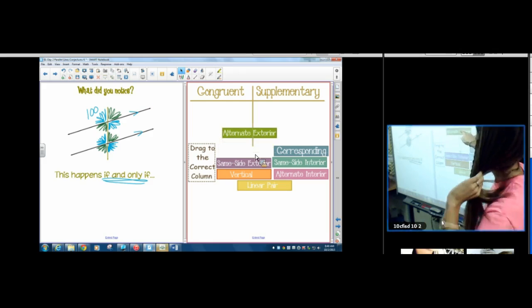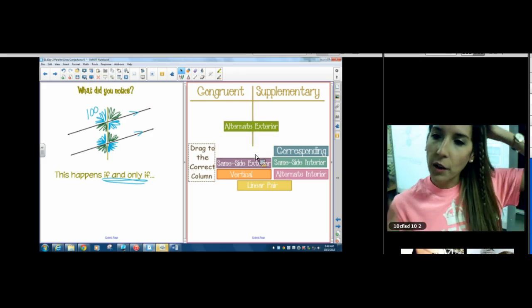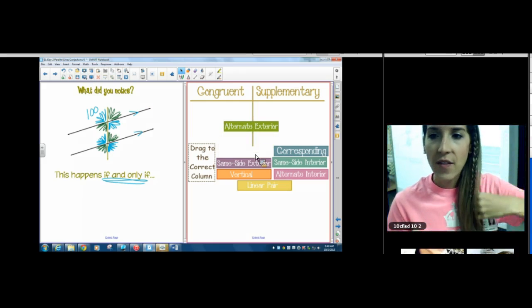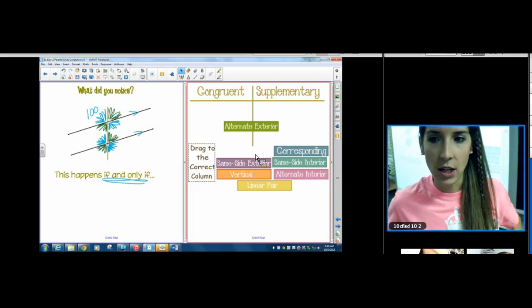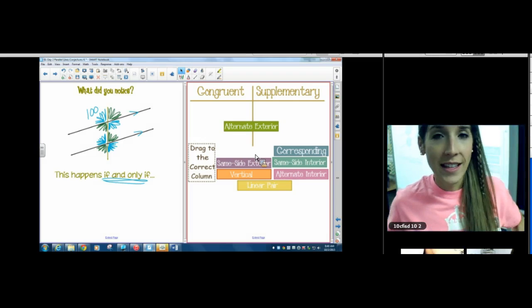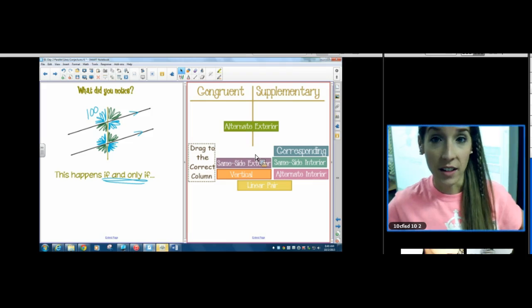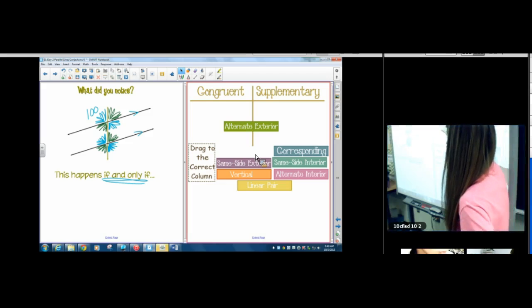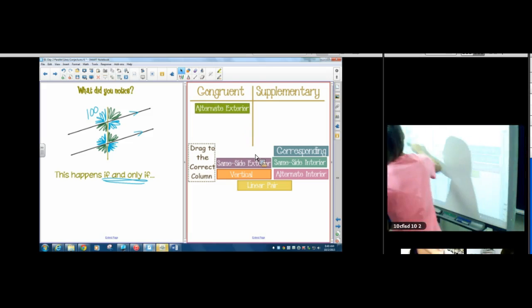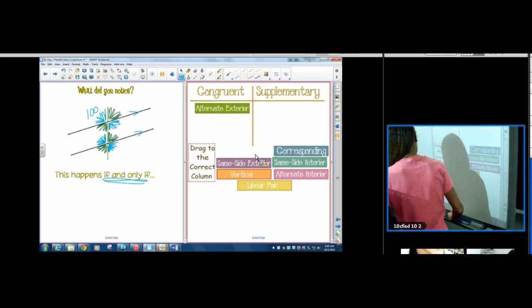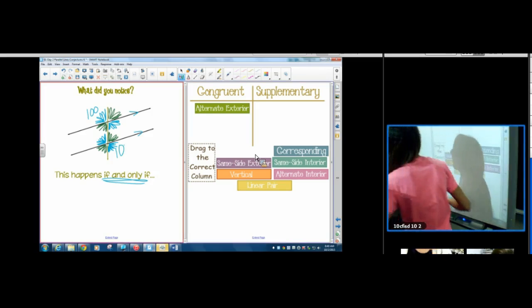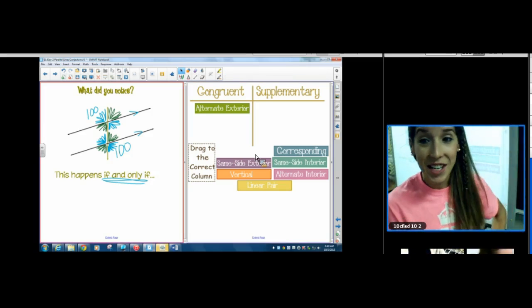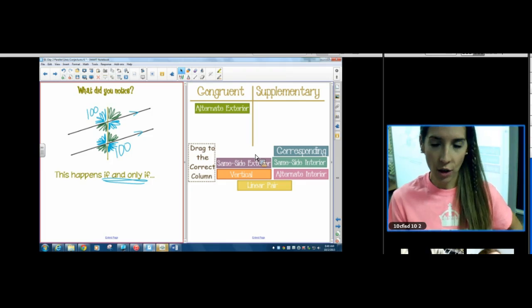So when the situation happens, if you know one angle, you know all eight angles at once. That's powerful, people. So now what we're going to do is we're going to take all the vocab words that we had yesterday and we're going to categorize them. Okay? So let's look at each one. Let's pull this one first. Alternate exterior. Look at your shading and find two angles that are alternate exterior. Are they the same color or are they different colors? Are they congruent or are they supplementary?